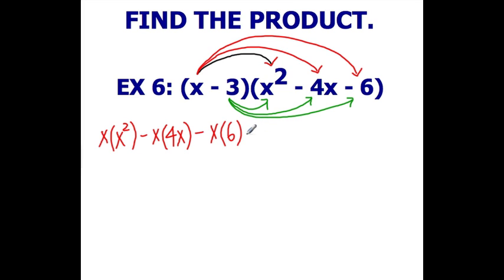So you will have the product of negative 3 multiplied by x squared. Next, you will have the product of negative 3 with negative 4x. And your last product here will be negative 3 and negative 6.